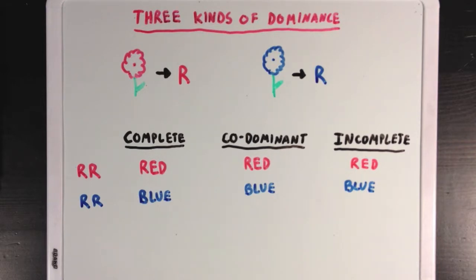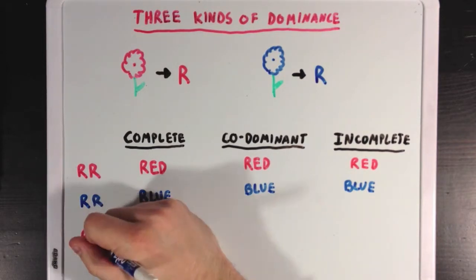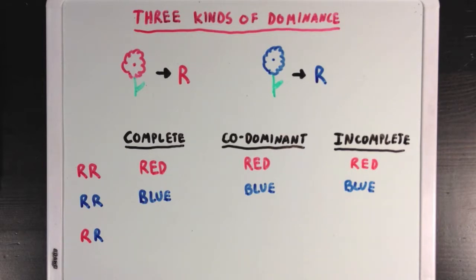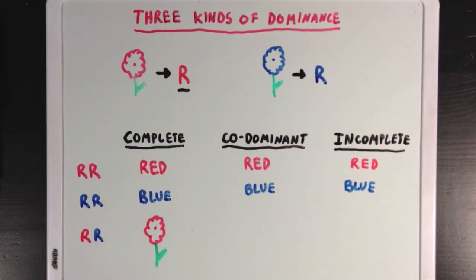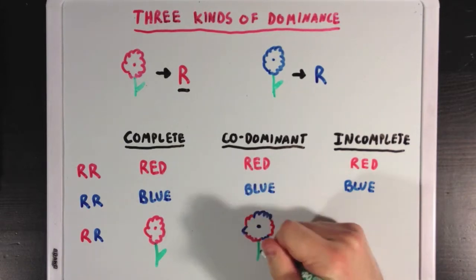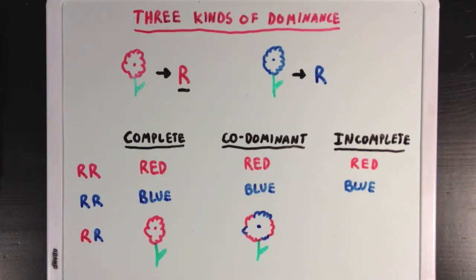These three different dominance patterns differ when we look at the heterozygous example. We're already familiar with complete dominance: if the red R is dominant over the blue R, then the heterozygous phenotype is a red flower. Now, codominance is when the heterozygous phenotype shows a flower with some red petals and some blue petals — the two alleles are dominant together, they are codominant, and traits of both alleles show up in the phenotype.